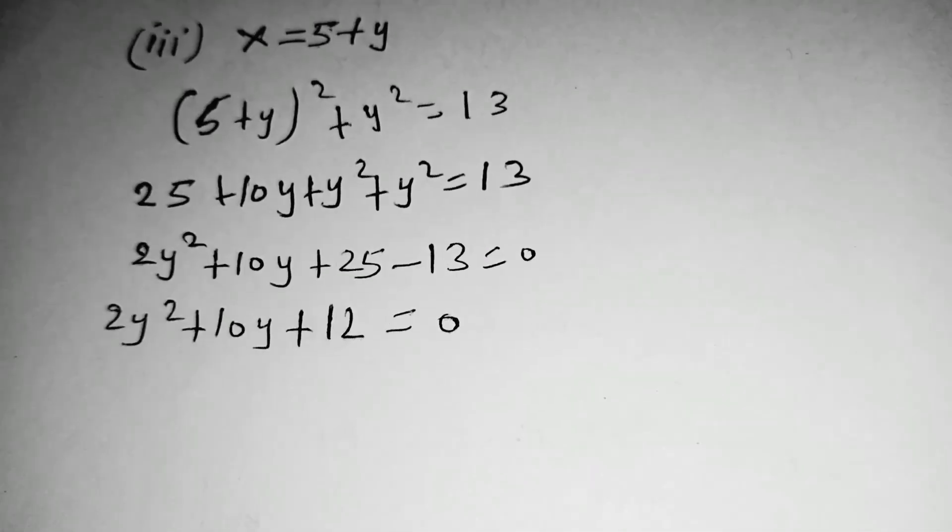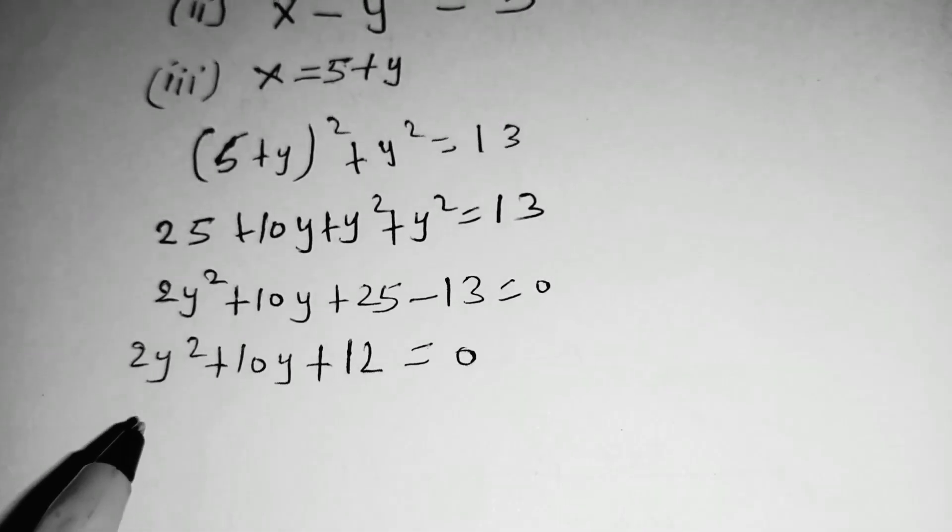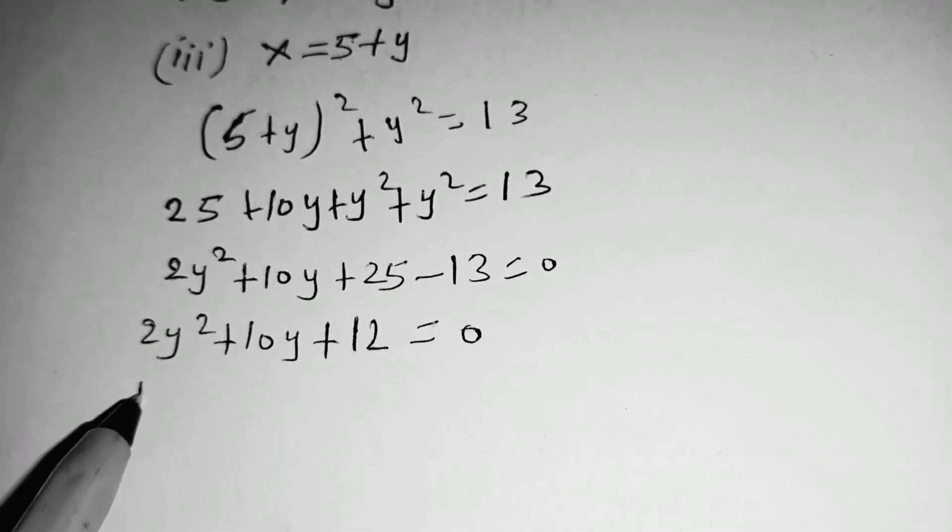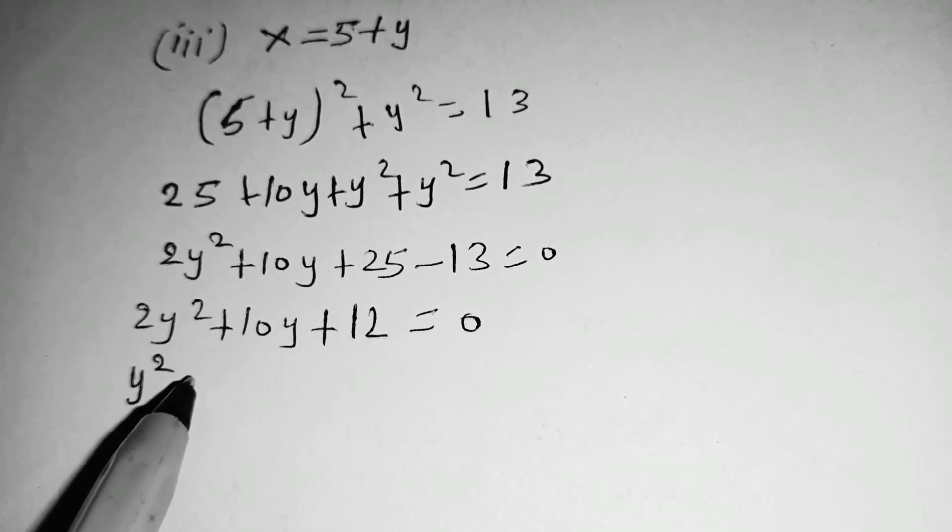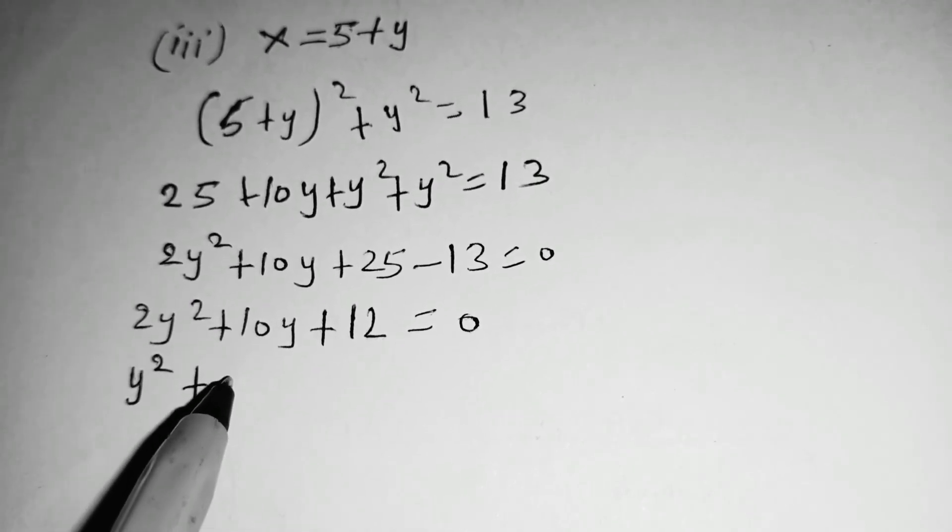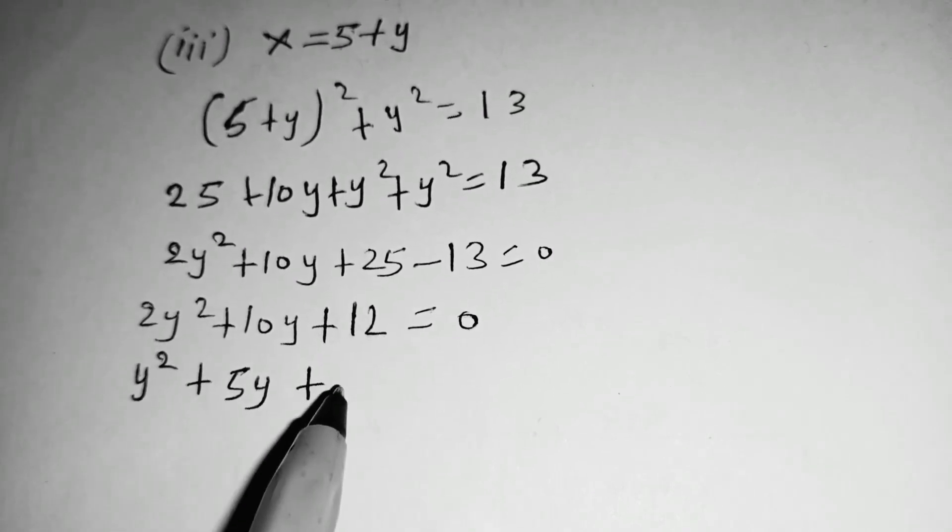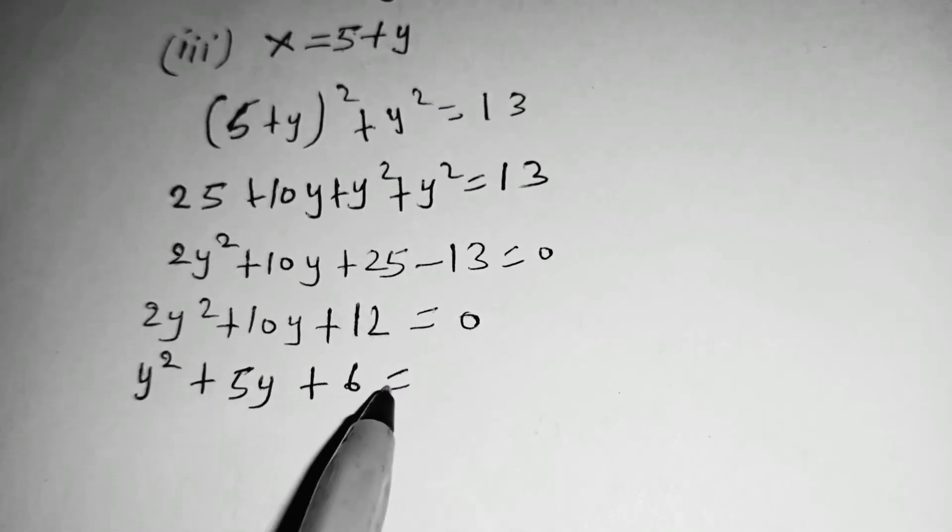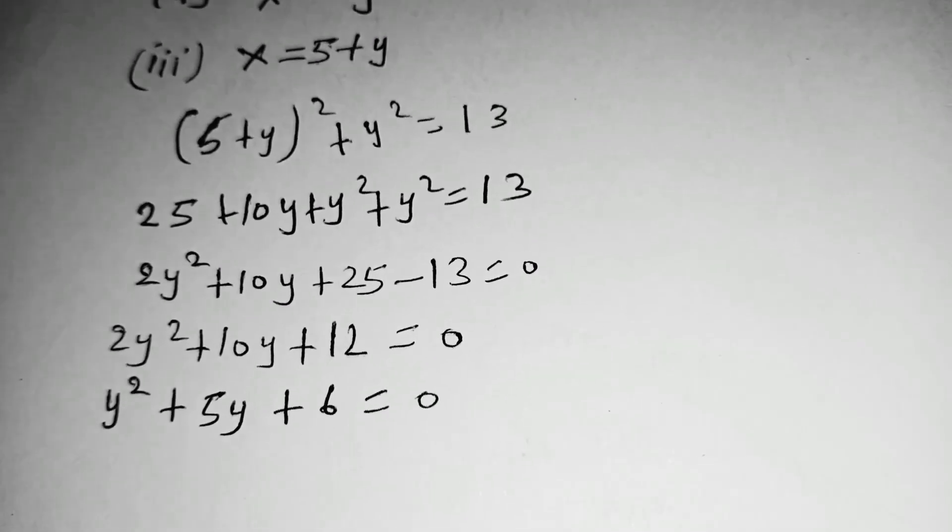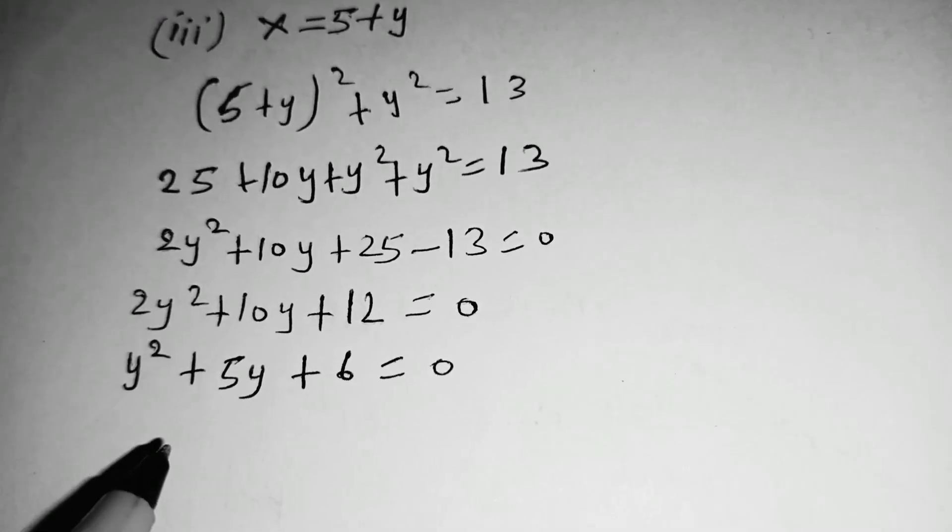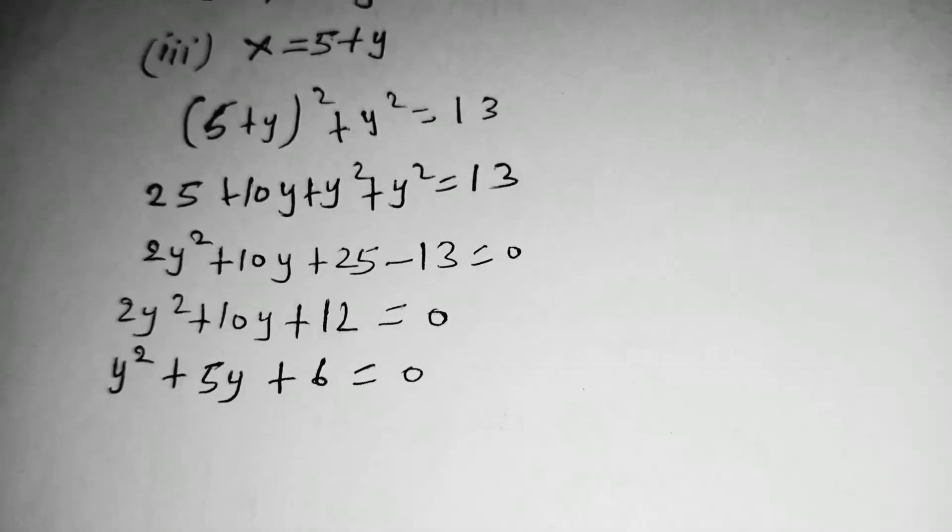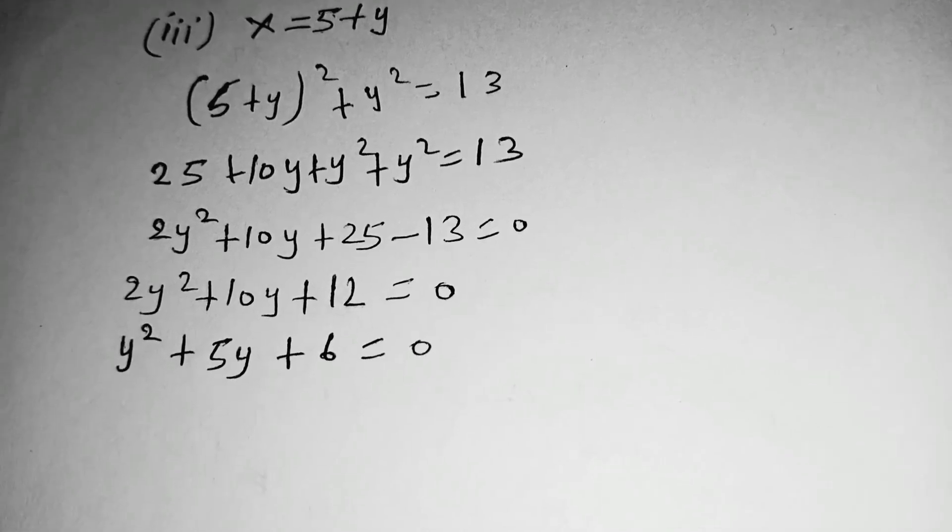Then we divide this equation by 2. So 2y squared divided by 2 is y squared, plus 10y divided by 2 is 5y, plus 12 divided by 2 is 6, which is equal to 0. So then this is a quadratic equation which we can solve by factorizing.